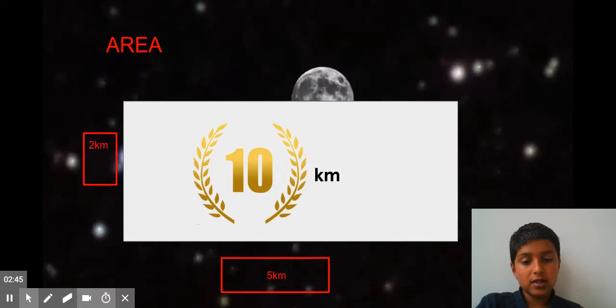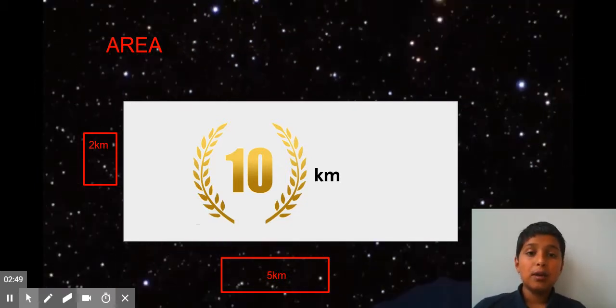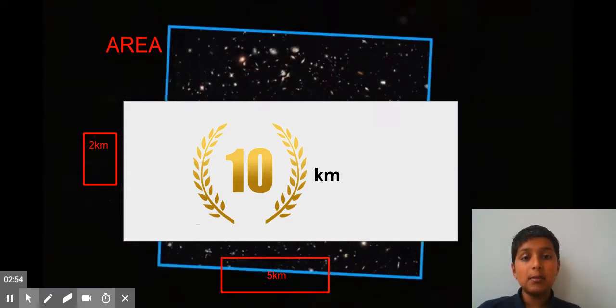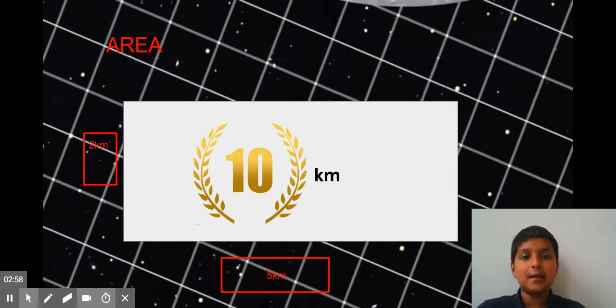at our length. Our length here is 5 kilometers. In perimeter, we add them up and multiply by 2, but in area it becomes easier. All you're going to do is length times width.